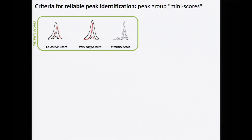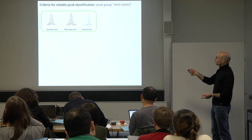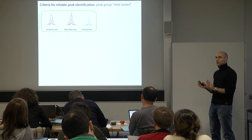We use different sets of scores to assess peptide identification. The first set are intrinsic scores — chromatography-based only. The coelution score tells you how well the retention time apex of your different transition channels match. Peak shape scores tell you whether peaks have the same widths, go up and come down at the same times, or whether interference causes a shift in peak shape. Intensity scores give prevalence to higher-intensity peaks versus lower-intensity ones. These intrinsic scores need nothing more than the chromatographic information itself.